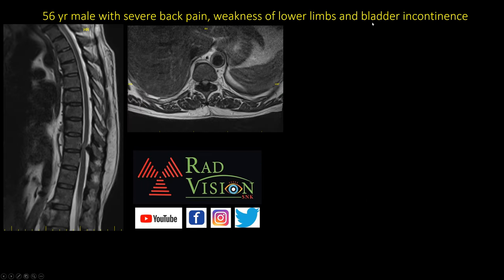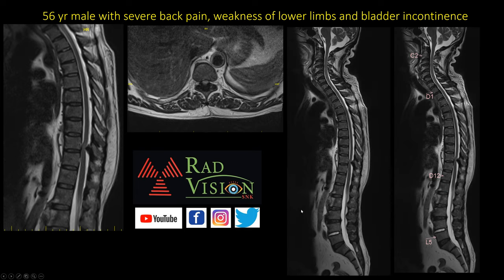Next case: 56-year-old male with severe back pain, weakness of lower limbs, and bladder incontinence. There is significant ligamentum flavum thickening causing compression of the thecal sac and spinal canal narrowing, with T2 hyperintensities in the spinal cord at that level, suggestive of cord edema or compressive myelopathy. While ligamentum flavum thickening is seen at multiple levels, the teaching point is that it most commonly occurs at the T10-T11 level in the thoracic region.